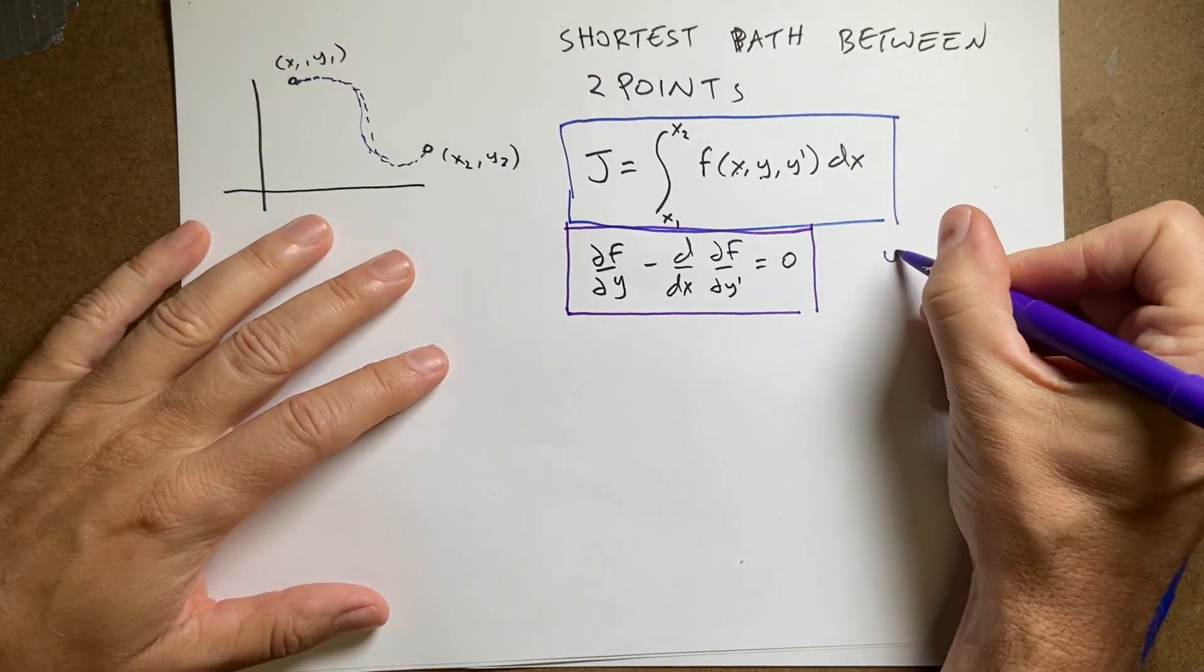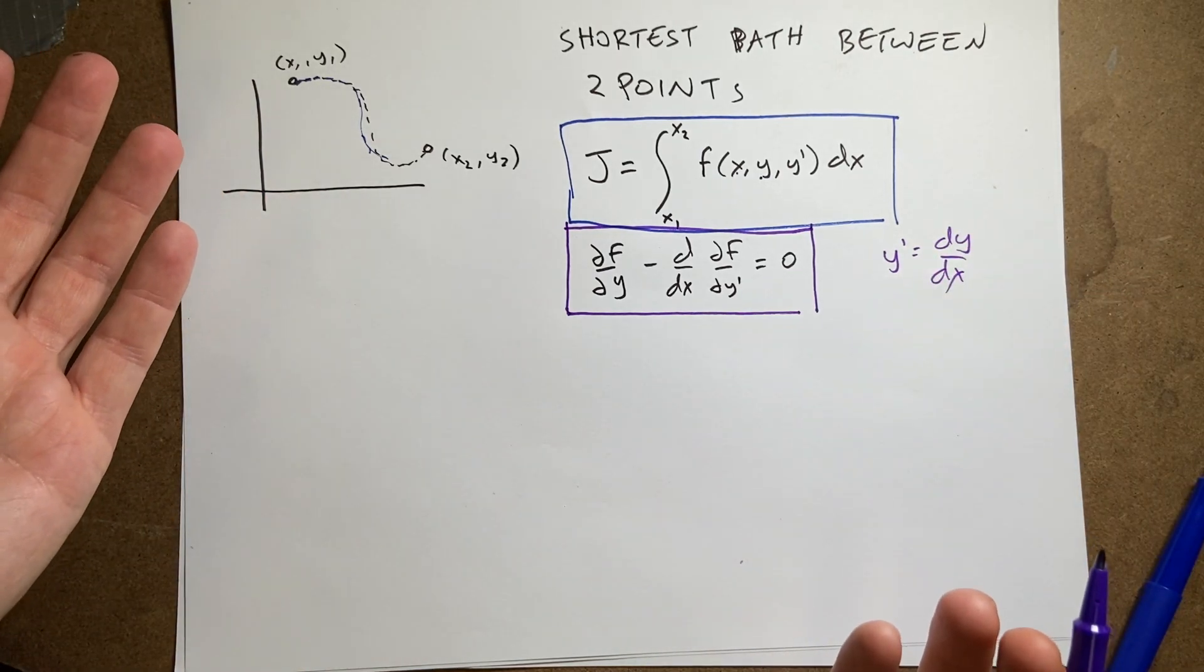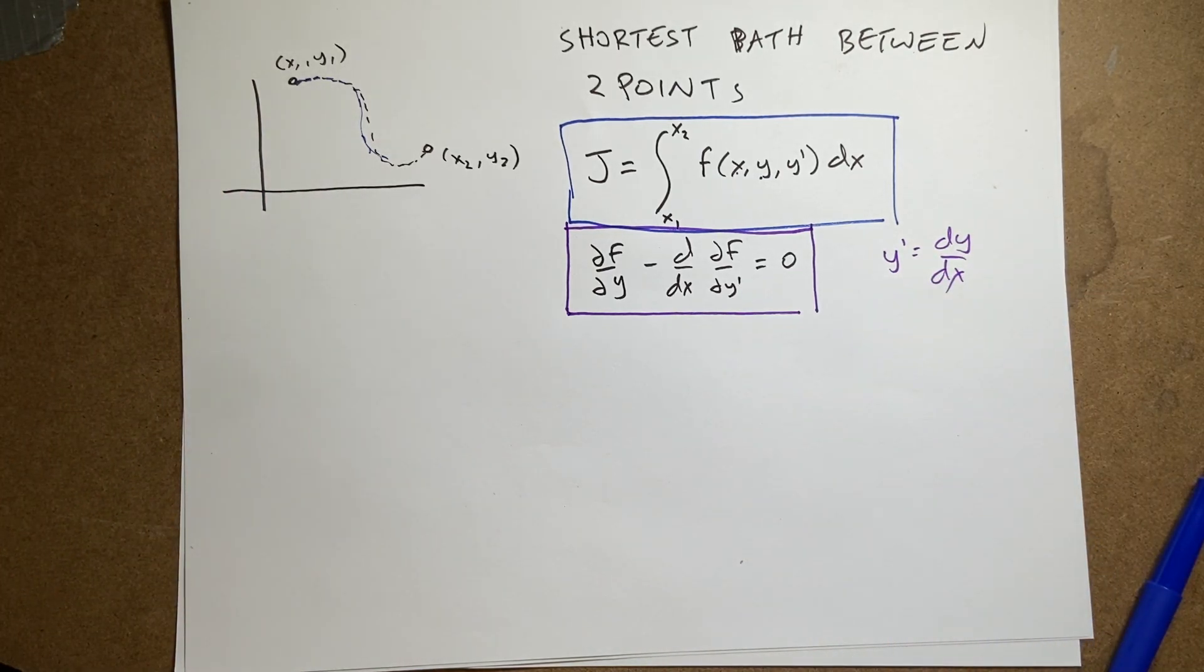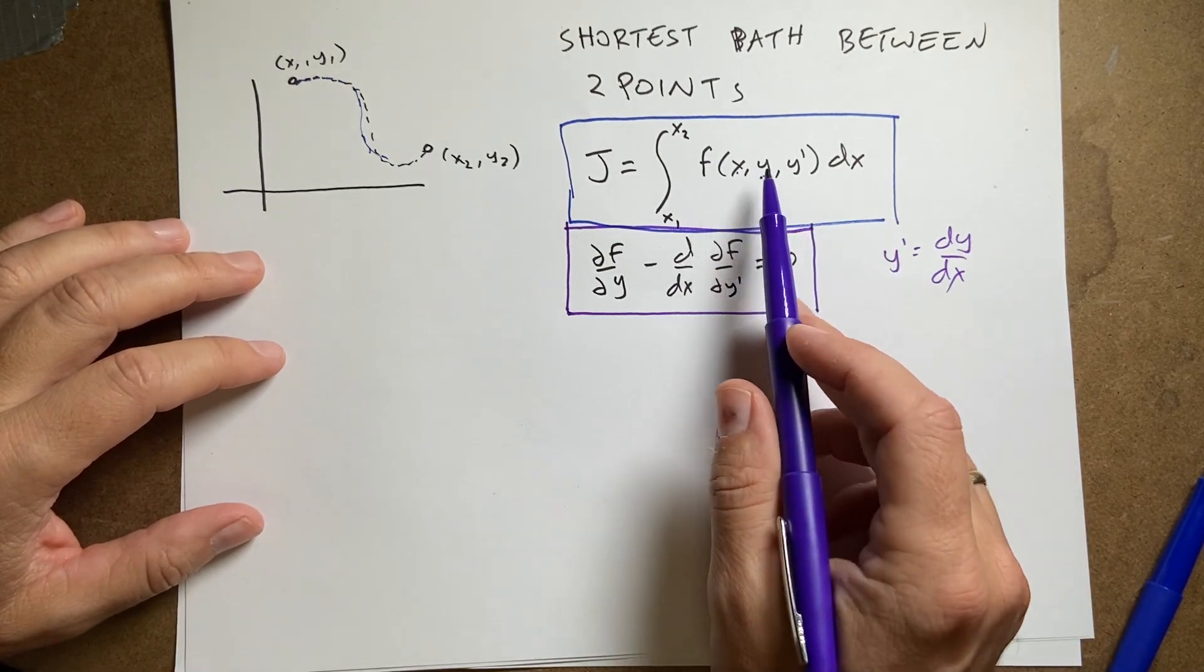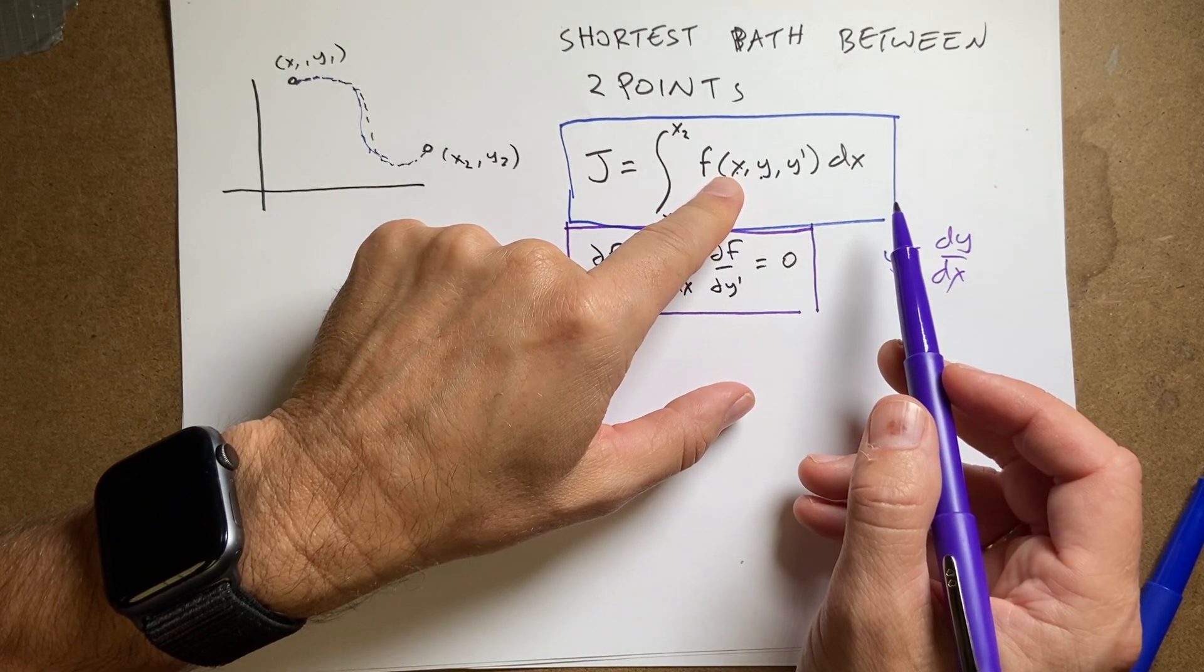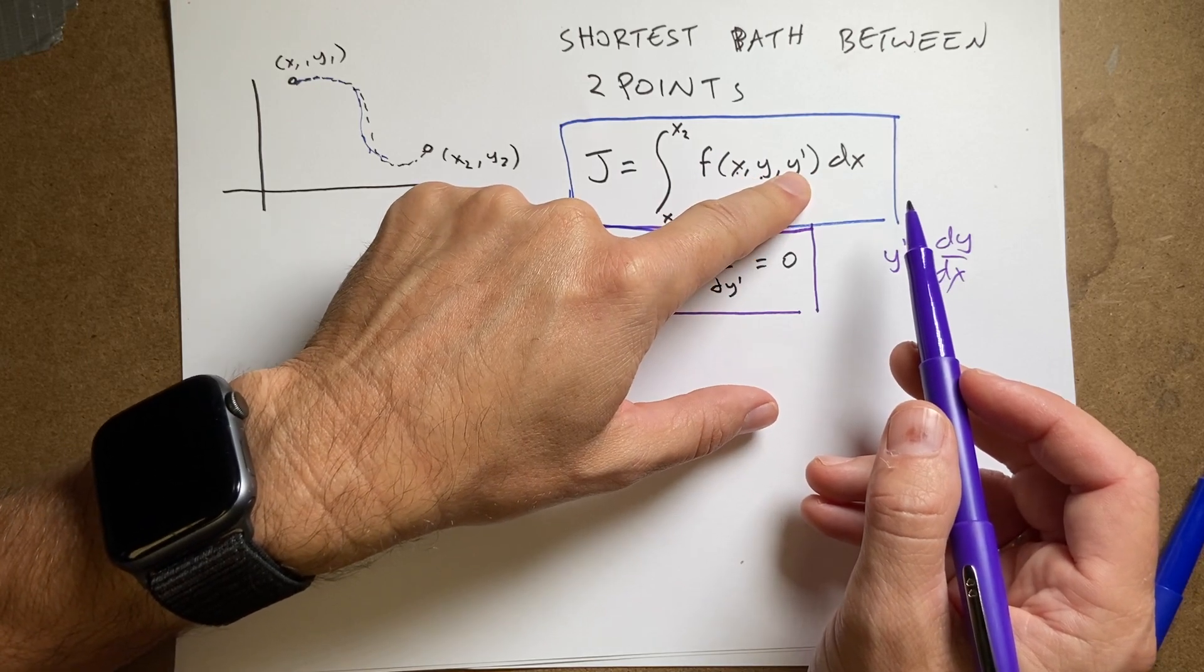So, this says that if I have a function of x, y, and y prime. And y prime, just to be clear, y prime is dy dx. I mean, I'm using the variables x and y, but we could use x and t or whatever. It doesn't matter. And that's what's great about this. It doesn't matter what your variables are. But I need this integral depends on the value of x, it could have been y, and the derivative of y.